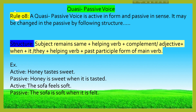Quasi-passive voice. First you have to know what quasi-passive voice is. A quasi-passive voice is active in form but passive in sense. That means according to meaning it's a passive sentence, but according to structure it will be active voice. You can change it into passive voice by using the following structure: subject remains the same, plus helping verb, plus complement or adjective, plus 'when' plus 'it' or 'they,' plus helping verb, plus past participle form of the main verb.